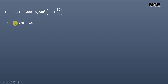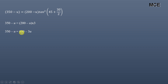Substituting, we get: 350 minus u = (200 minus u) × 3, because tan²(45 + 30/2) = tan²(60) = 3. This gives 350 minus u = 600 minus 3u, or 2u = 250, therefore u = 125 kilopascal.